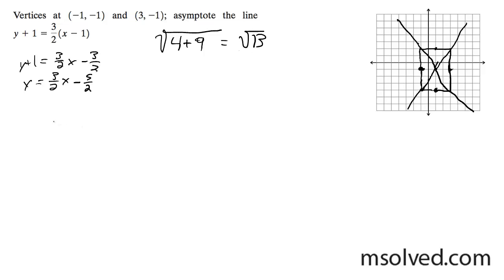The equation is going to be x minus 1 squared over 4 minus y plus 1 squared over 9 equals 1.